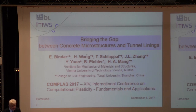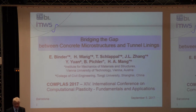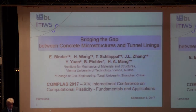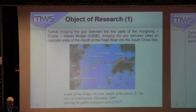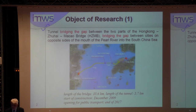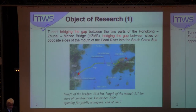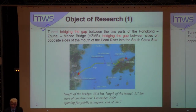The object of research is the tunnel bridging the gap, as stated in the title, between the two parts of the Hong Kong-Zhuhai-Macao Bridge, bridging the gap between cities on opposite sides of the mouth of the Pearl River into the South China Sea. The length of the bridge is 35.6 kilometers. The length of the tunnel is 5.7 kilometers. Construction started in December 2009 and the opening for public transport is scheduled for the end of 2017.